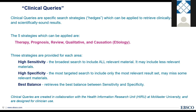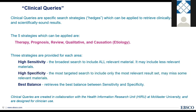In CINAHL, the clinical queries limiter has five different strategies: therapy, prognosis, review, qualitative, and causation. For each, there are three approaches: high sensitivity — the broadest search; high specificity — the most targeted; and best balance — a balance between sensitivity and specificity. On EBSCO Connect there is a help article about clinical queries that details the search strategies used for each. I'll point that out later in the session when we visit EBSCO Connect.